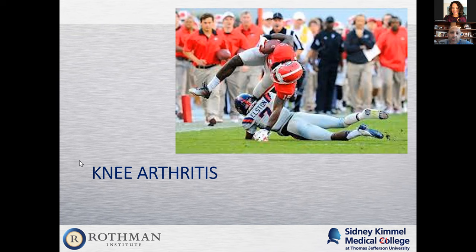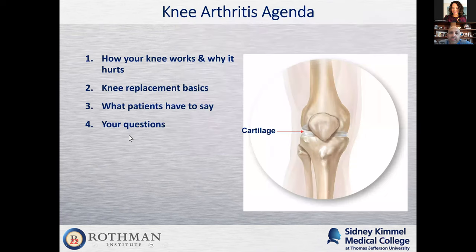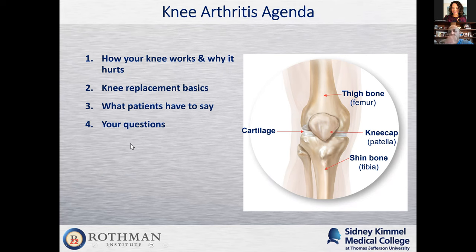So we'll go on to knee arthritis. The knee is the biggest joint in the body. It's made up of three main bones: the tibia, the shin bone; the femur, the thigh bone; and the patella, the kneecap. In between these bones all through here is cartilage, and that allows the knee to move smoothly with range of motion.